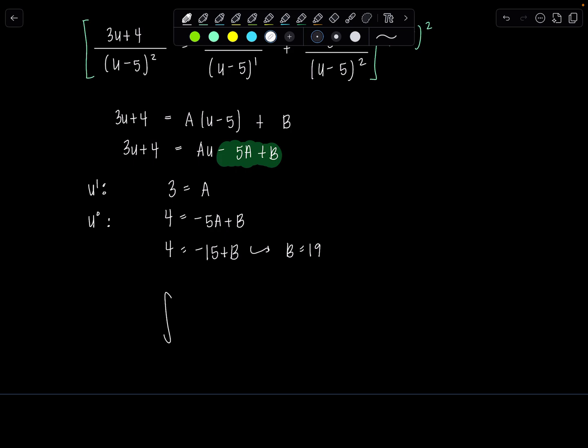Okay, so we've got the integral of 3 over u minus 5—that was A over u minus 5—plus B is 19 over u minus 5 squared, du.